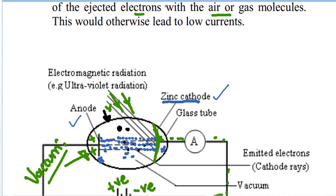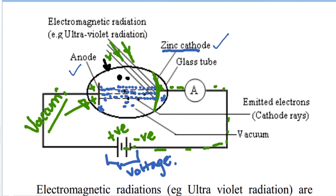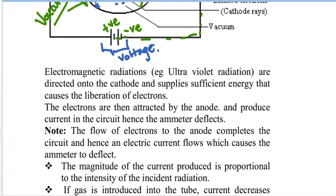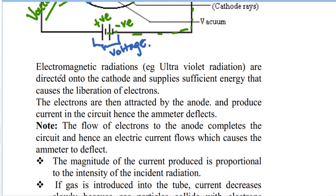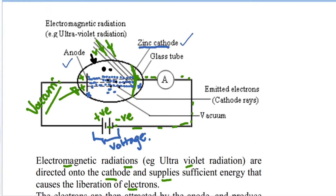To avoid loss of energy, the tube is evacuated — made a vacuum — so electrons are able to move freely. The glass tube is evacuated to avoid collision of ejected electrons with air or gas molecules, which would otherwise lead to low currents.